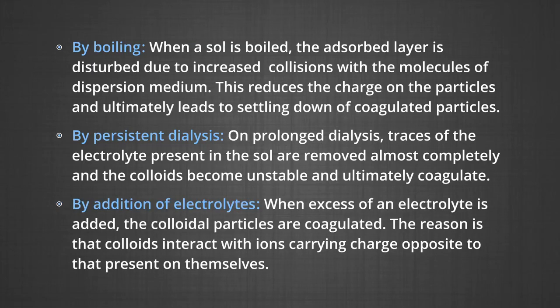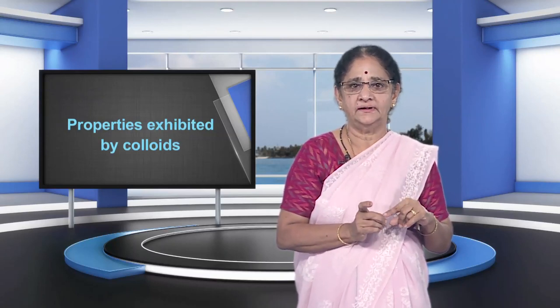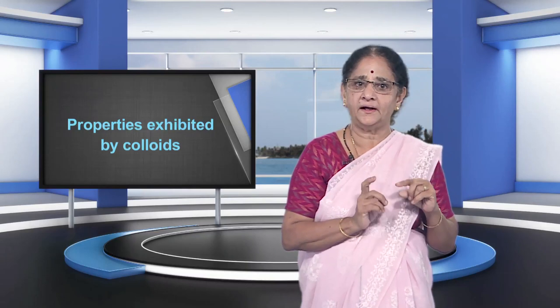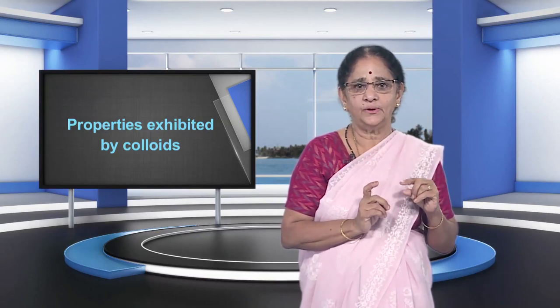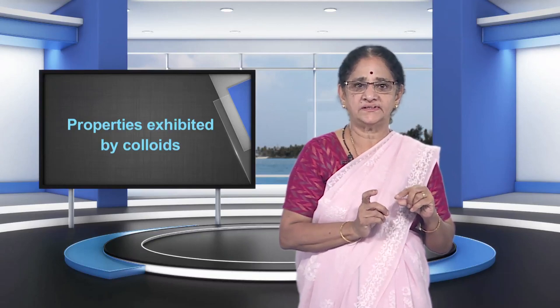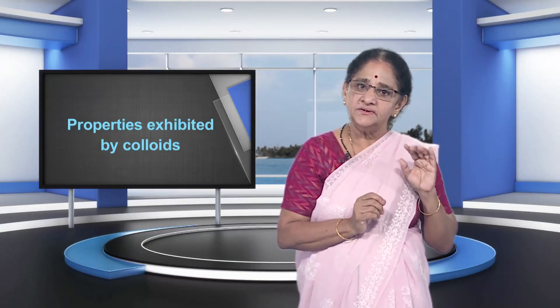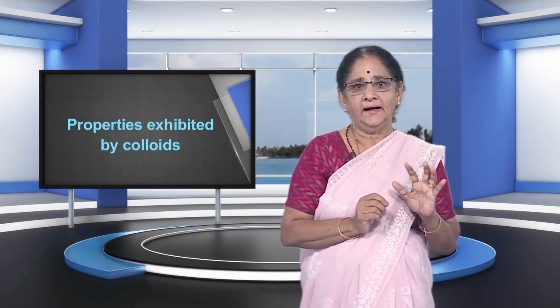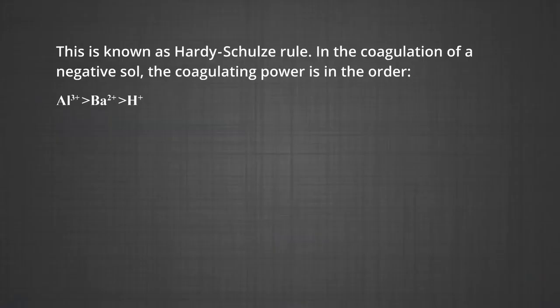Number five, by addition of electrolytes: when an excess of electrolyte is added, the colloidal particles are coagulated. The colloidal particles interact with ions carrying charge opposite to that present on themselves, causing neutralization leading to coagulation. The ion responsible for neutralization of charge on the particles is called the coagulating ion. A negative ion causes the coagulation of a positively charged sol and vice versa. Generally, the greater the valence of the coagulating ion added, the greater is its power to cause coagulation. This is known as the Hardy-Schulze rule. In the coagulation of a negative sol, the coagulating power is in the order Al³⁺ > Ba²⁺ > H⁺.